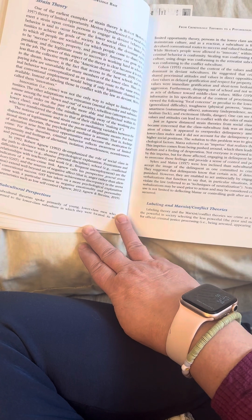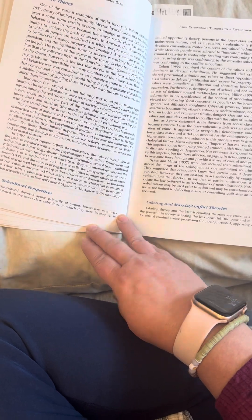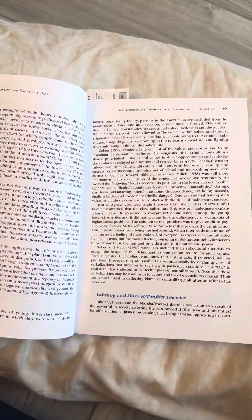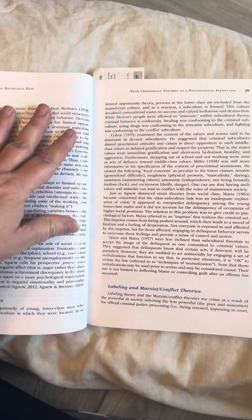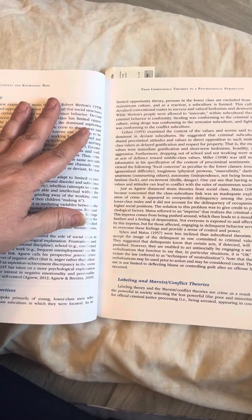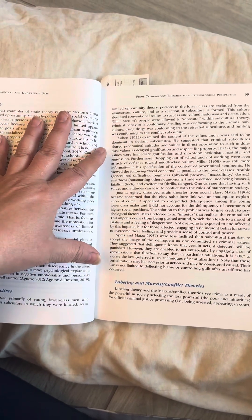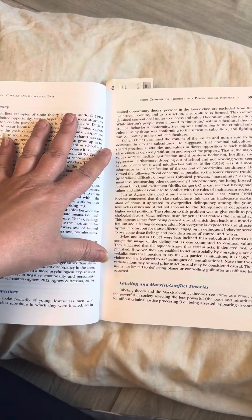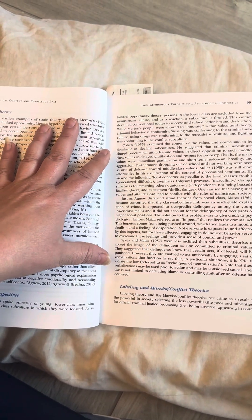Subcultural perspectives. Subcultural theorists spoke primarily of young lower class men who conformed to the lower class subculture in which they were located. As in limited opportunity theory, persons in the lower class are excluded from the mainstream culture, and as a reaction a subculture is formed. This culture devalued conventional routes to success and valued hedonism and destruction. While Merton's people were allowed to innovate, within subculture theory, criminal behavior is conformity. Stealing was conforming to the criminal subculture, using drugs was conforming to the retreatist subculture, and fighting was conforming to the conflict subculture.